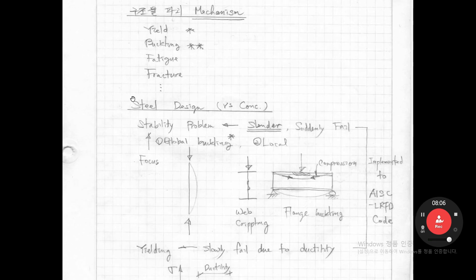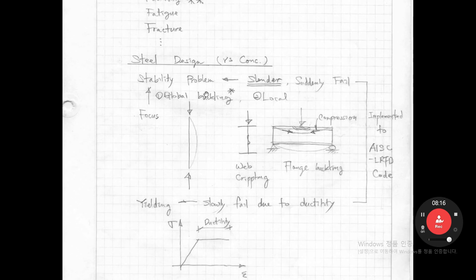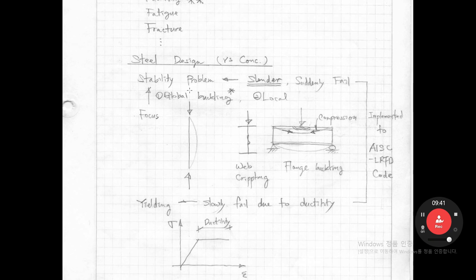I'll compare steel design versus concrete design. Steel has stability problems because it has very high strength. In order to reduce the amount of steel material, we make steel members slender — thin and slender. So the buckling problem in steel members occurs. Concrete members are somewhat massive, not slender, so concrete is not sensitive to buckling. The concrete member has the problem of crack, but steel members have a stability — that is, buckling — problem.